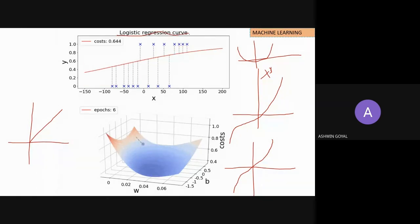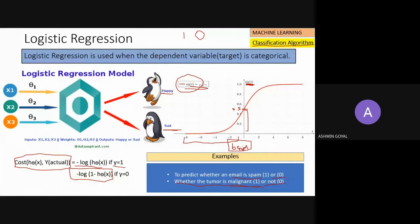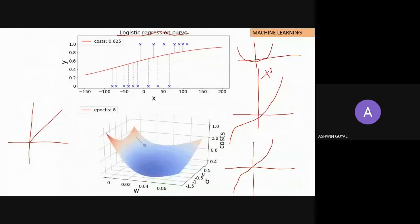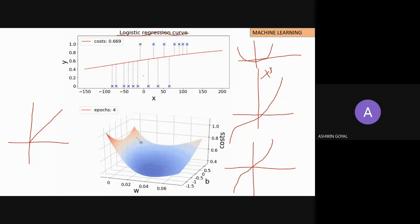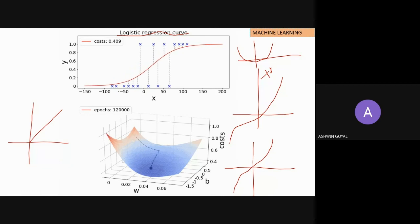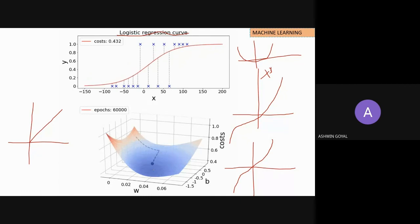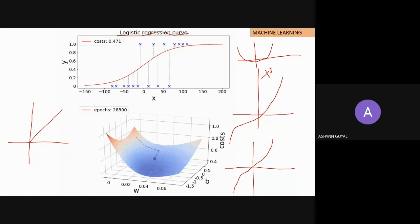For logistic regression, we are not using a polynomial function — we are using this more complicated sigmoid function. This is the cost function being used, and it helps predict the class. These are the data points and this is the curve that fits best on them. The objective is always to minimize the loss function or cost function, and logistic regression helps us reach there.